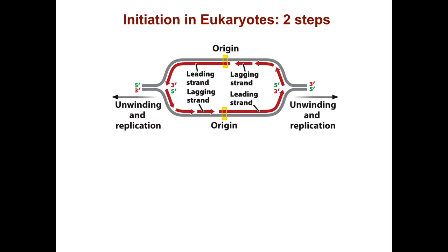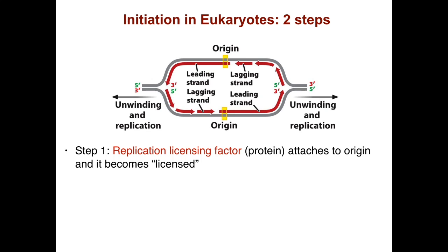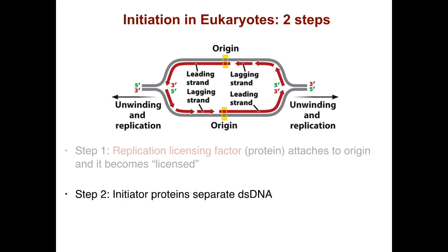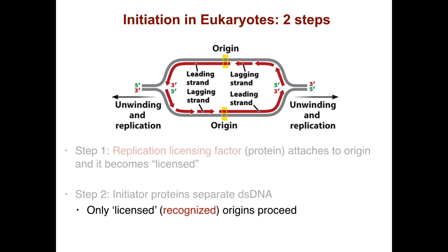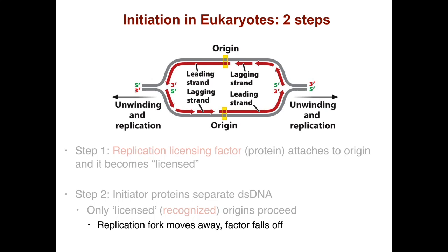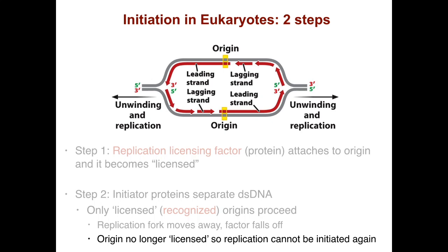Initiation in eukaryotes has two different steps. Step one: the replication licensing factor attaches to the origin, and then the origin becomes licensed. Step two: an initiator protein separates the double-stranded DNA. Only licensed recognized origins proceed. Then the replication fork moves away, and these factors fall off, so the origin becomes no longer licensed and replication cannot be initiated again.